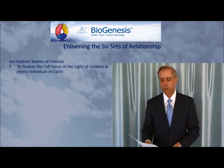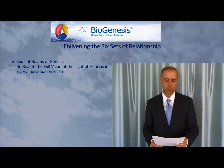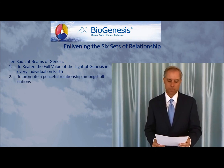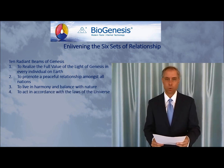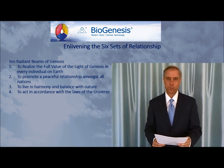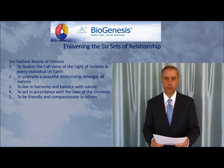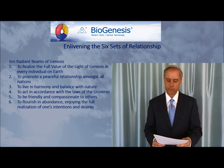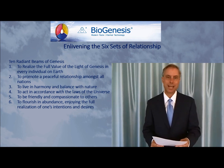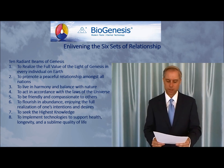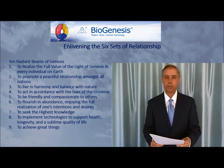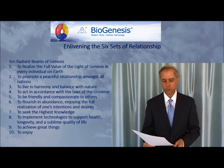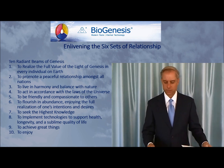The ten radiant beams of Genesis are: First — to realize the full value of the light of Genesis in every individual on Earth. Second — to promote a peaceful relationship amongst all nations. Third — to live in harmony and balance with nature. Fourth — to act in accordance with the laws of the universe. Fifth — to be friendly and compassionate to others. Sixth — to flourish in abundance, enjoying the full realization of one's intentions and desires. Seventh — to seek the highest knowledge. Eighth — to implement technologies to support health, longevity, and a sublime quality of life. Ninth — to achieve great things. Tenth — to enjoy.